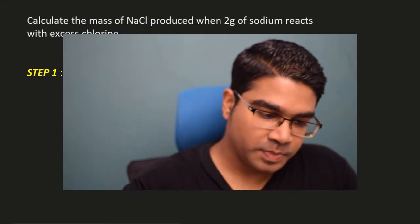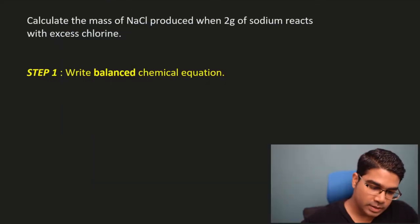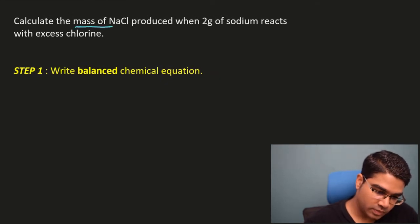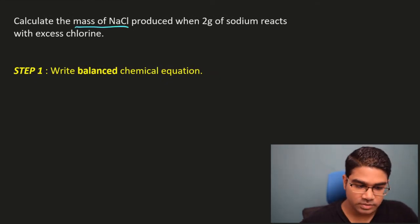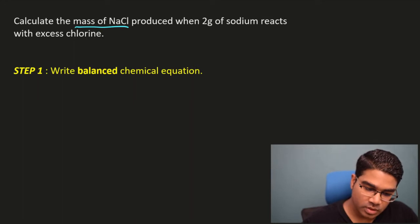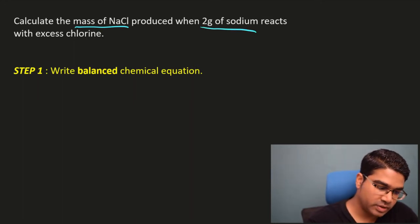I've broken this process down into five simple steps. Let's look at the question first: calculate the mass of NaCl, sodium chloride, produced when two grams of sodium reacts with excess chlorine.